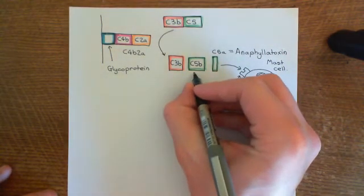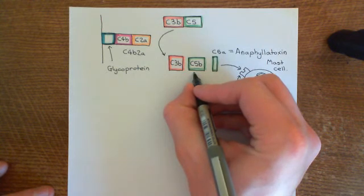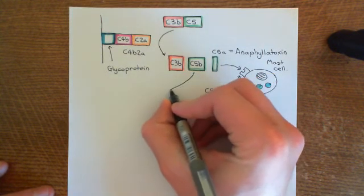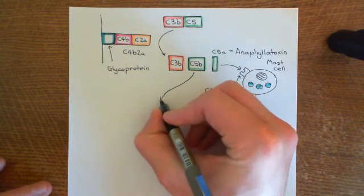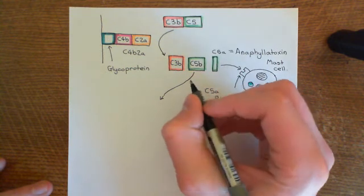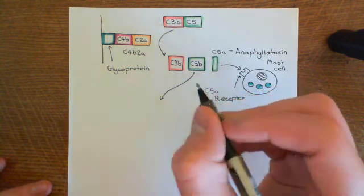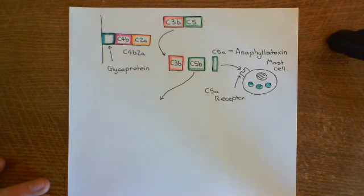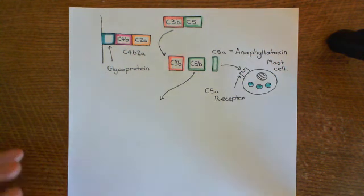Now what does C5B do? Basically, C5B is going to start associating with other complement proteins, and we'll continue this discussion to see how it's going to be involved in forming something known as the membrane attack complex in the next video.